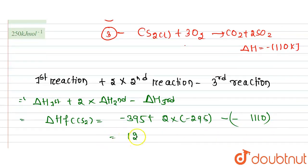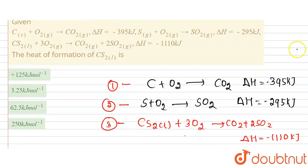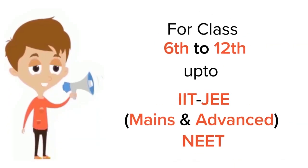Calculating the value gives 125 kJ for the heat of formation of CS₂. The answer is the first option: 125 kJ per mole.